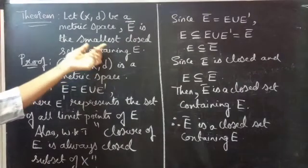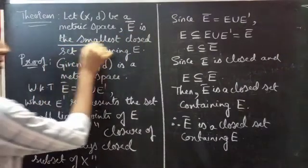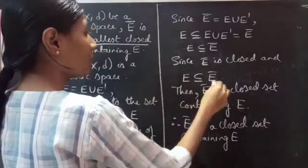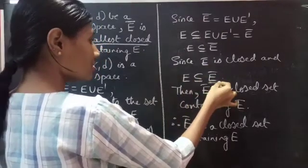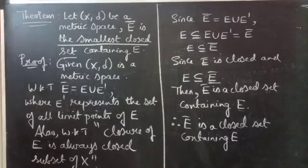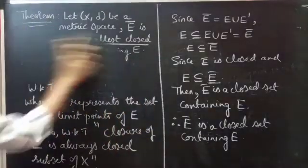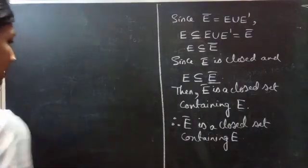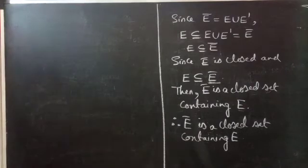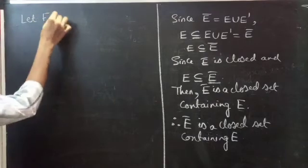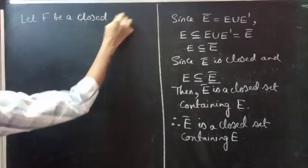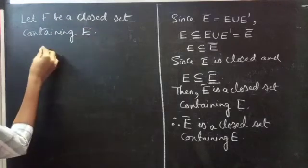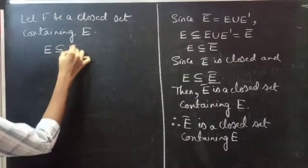We have proved that E-bar is a closed set containing E, but we have to show that E-bar is the smallest closed set. To prove this, we will assume another closed set which contains E. Let capital F be a closed set containing E, so symbolically E is a subset of F.